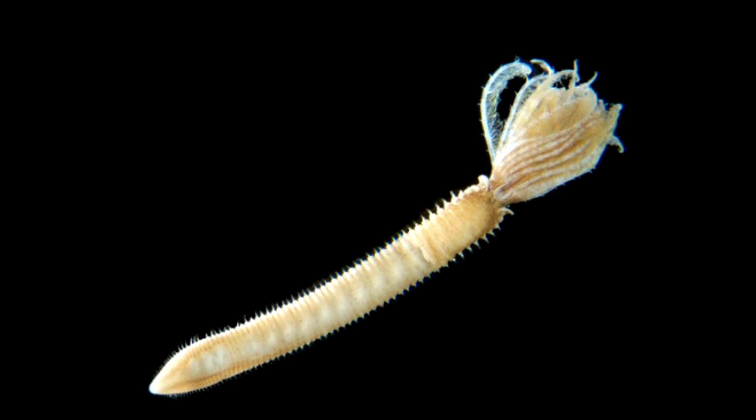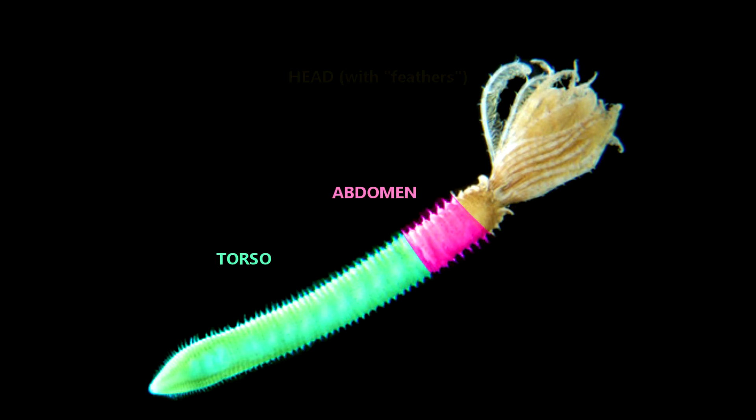These segments are typically divided into a torso and an abdomen based on their function. Feather duster worms also have a head from which their plume of feathers extends.